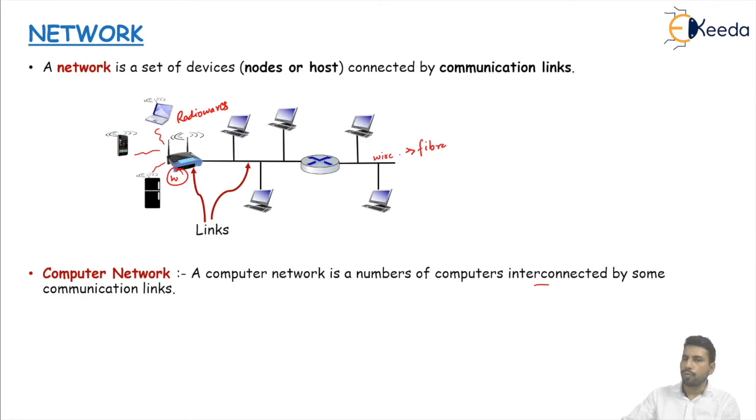Now we created a network, we define the computer network. The next question is what is the main objective of network, or you can say what is the main purpose of creating a network. The objective of the network is sharing resources. Here the resources may be hardware resources, software, or data. In hardware, we see the example - in our laboratories or in library you see two or three PCs are using a common printer.